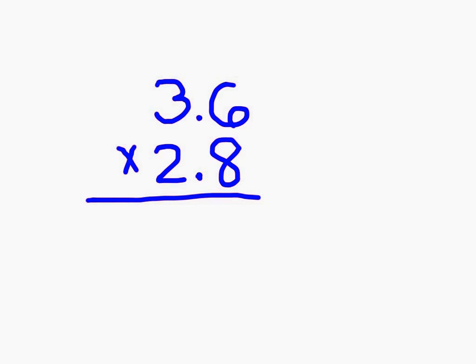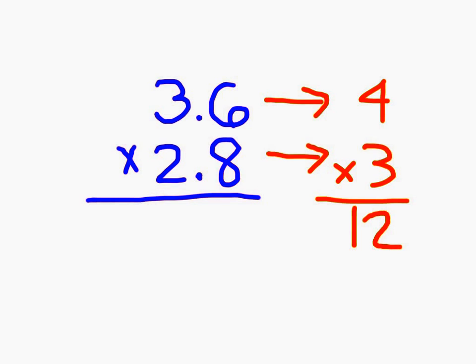We could also make an estimate of this answer by rounding each of these decimal numbers to a whole number. 3 and 6 tenths is close to 4, 2 and 8 tenths is close to 3, so 4 times 3 is 12. This means our exact answer should be somewhat around 12.